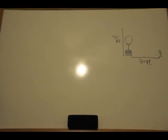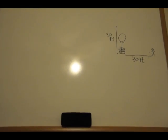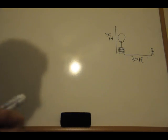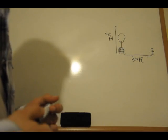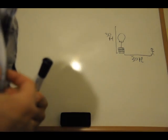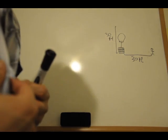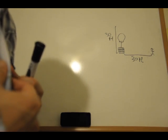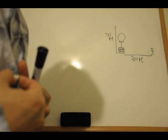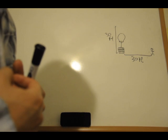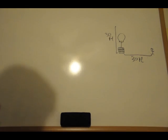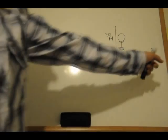We're going to talk about related rates again, and this one is an angle of elevation problem. It states: a balloon rises at the rate of three meters per second from a point on the ground 30 meters from the observer. Find the rate of change of the angle of elevation of the balloon from the observer when the balloon is 30 meters above the ground.